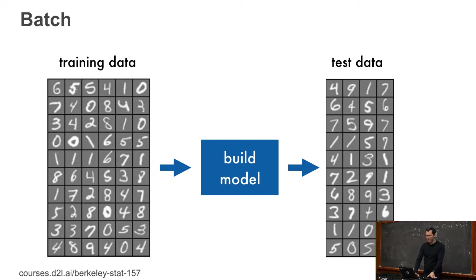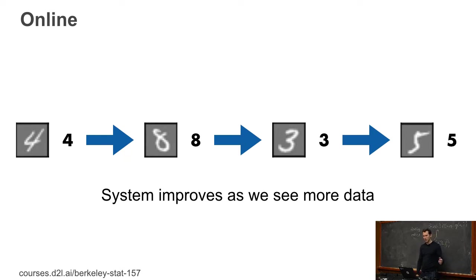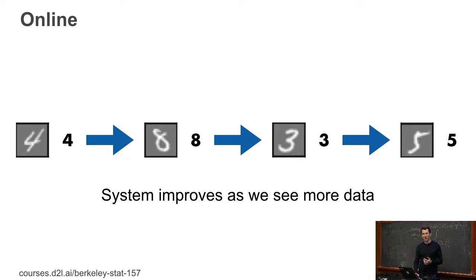In the batch setting, you have some training data, you build a model, you have some test data, and you deploy it. Standard. Online: maybe I see a four, I update my model, I see an eight, I predict an eight, I update my model, I see a three, maybe I predict an eight again, but it's actually a three, I update my model — I keep on doing this. This is actually the scenario that's much more common for any meaningful, large, real-world problem being deployed. For instance, if you're running an ad service, you should be using online updates, because if not, you're losing money.